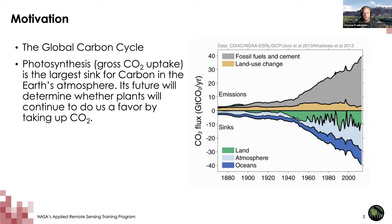The terrestrial biosphere takes up a substantial fraction of CO2 but is often very variable in time. This is one of the biggest uncertainties moving forward into a changing climate: will the biosphere still take up more CO2, or might this sink actually be reduced in the future, or even switch back into a source? To understand the land sink, we need to understand the engine of all biogeochemical cycles — photosynthesis.